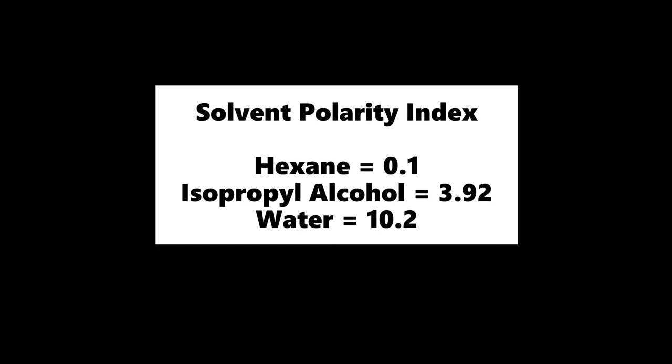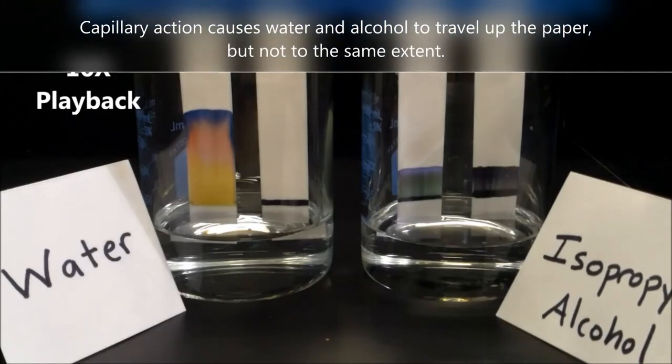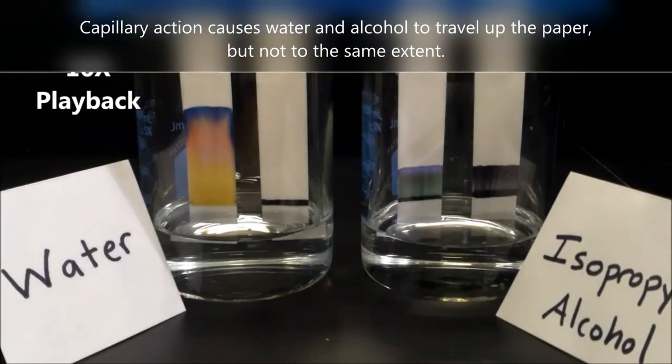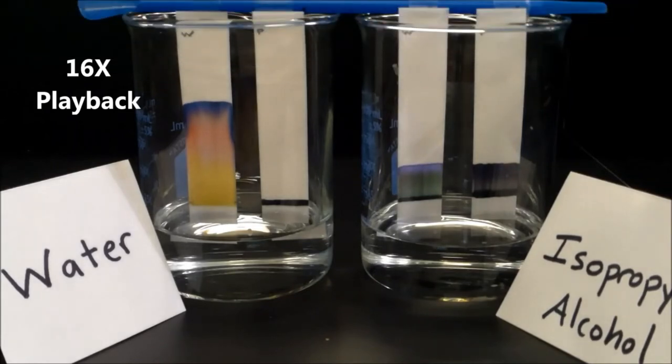If we compare isopropyl alcohol to other solvents, we see that it's much more polar than a non-polar solvent like hexane, but it's not nearly as polar as water is. Capillary action causes water and alcohol to move up through the paper, but not to the same extent. This is due to the fact that capillary action is greater in water due to its much higher polarity.